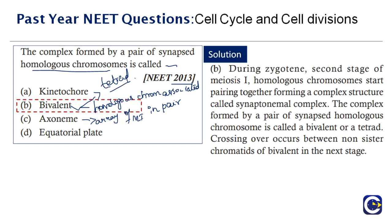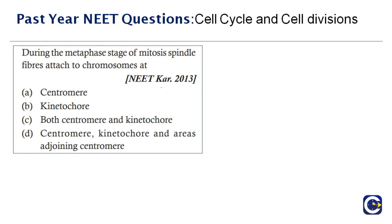The next question, also from 2013: 'During the metaphase stage of mitosis, spindle fibers attach to chromosomes at ___.' Options include centromere, kinetochore, both, or neither. Kinetochore is a complex protein associated with the centromere to which microtubules of the spindle attach, so the answer cannot be centromere alone.